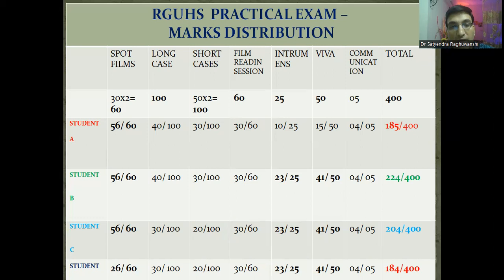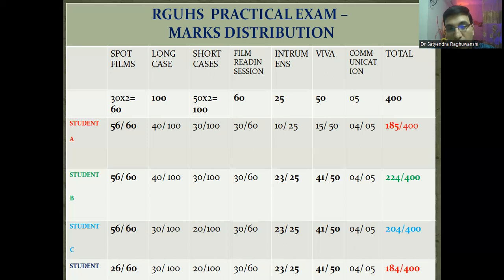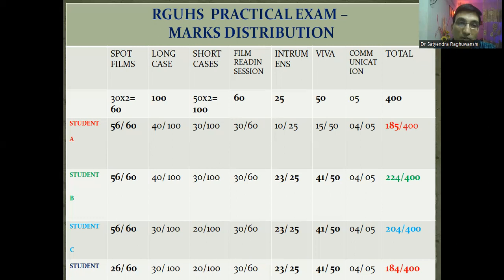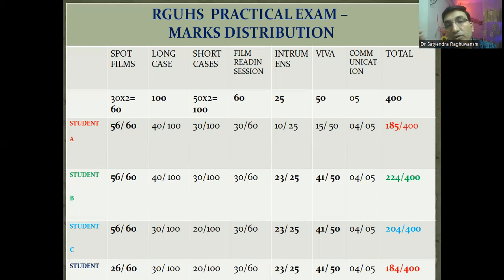Another student is not performing well in any of the heads except table viva and instruments, but performing very poorly in spotters, so he could not pass. That is the significance of spotters, instruments, and table viva. If you really want to pass and go through the 50% mark, you should emphasize spotters, table viva, and instruments. Long case and short cases are a major chunk of the practicals — you cannot skip that. But if luck doesn't go in your favor, instruments, table viva, and spotters are very scoring and you should not miss out on these marks.